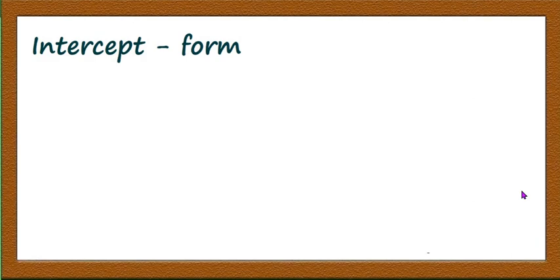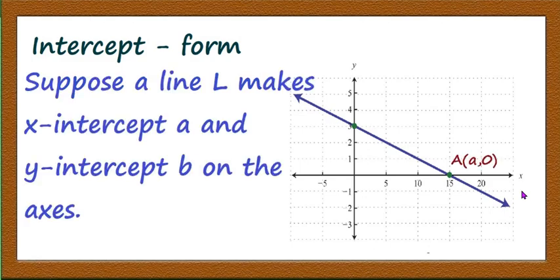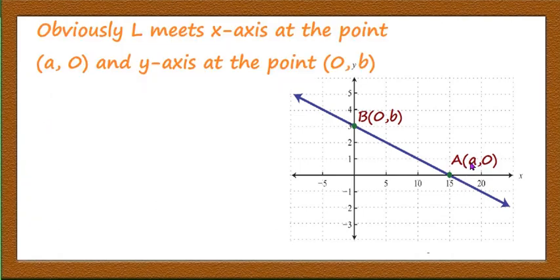The next form is intercept form. Here both x-intercept and y-intercept of the line will be given and we have to derive the equation of the line when both intercepts are given. Suppose a line makes x-intercept a and y-intercept b on the axis, then the point of intersection with the x-axis is (a, 0) and with the y-axis is (0, b). Now we have two points on the line: (a, 0) and (0, b), and we can use the two-point form to find the equation.